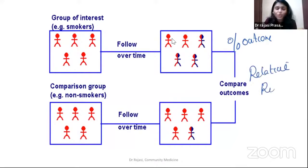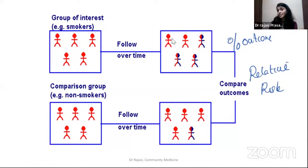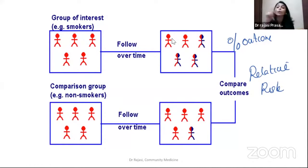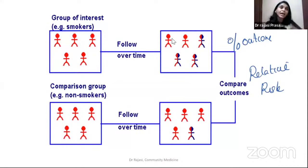Just look at the question and see from where you are starting the study — with cases and controls going back, or with exposure going forward. That tells you whether it is case control or cohort. Both are analytical study designs with one exposure and one outcome.